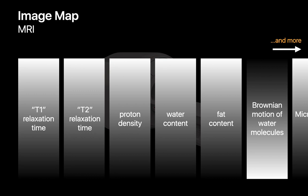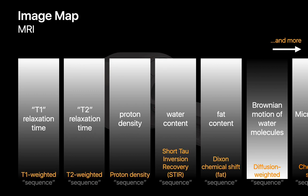We give different sequences of instructions to the magnets and electrical circuits inside the MRI machine depending on what image map we want — say a T1 relaxation time image map versus a proton density image map. These different sequences have different names. For example, the sequence for creating a T1 relaxation time image map is called a T1 weighted sequence, while the sequence for creating a water content map may be called a short tau inversion recovery sequence, abbreviated as STIR.